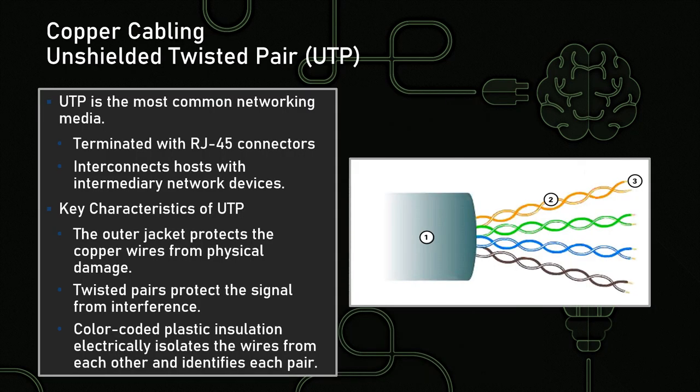UTP is our most common networking media. It's terminated with what's called an RJ45 connector — RJ stands for registered jack — and it has eight individual leads at the end. For standard network traffic, anything that's not gigabit, it only uses four of the eight leads, but gigabit transmissions require all eight. This connects a host to an intermediary network device — a switch, a router, a hub. The key characteristics of UTP are the outer jacket, the inner plastic insulation which is more so just for color coding, and then the twist in the strand itself.